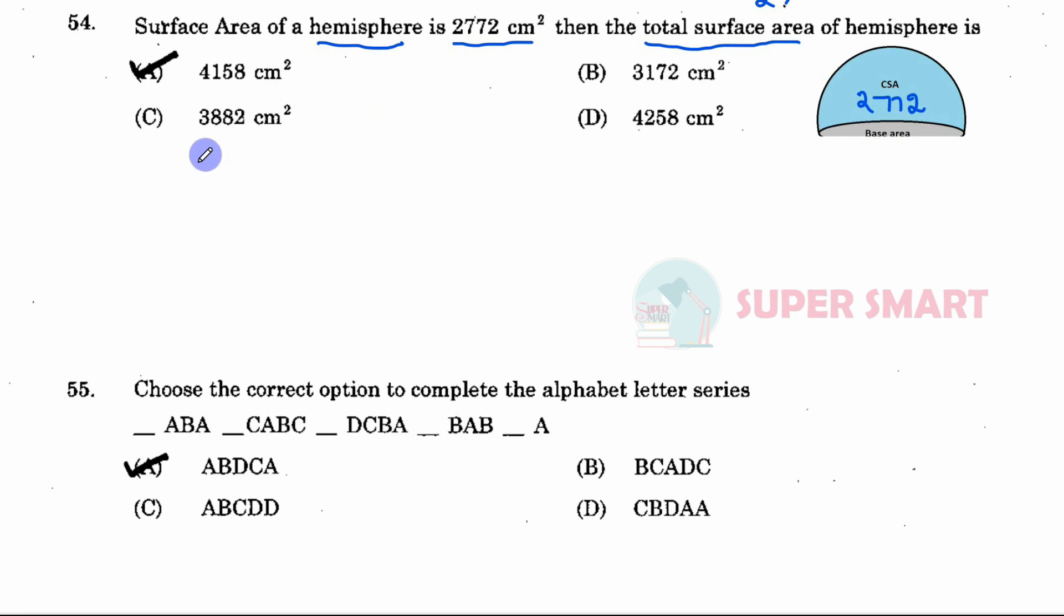For a hemisphere, the curved surface area is 2πr². The formula for total surface area is 3πr².